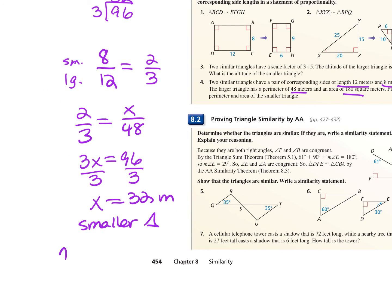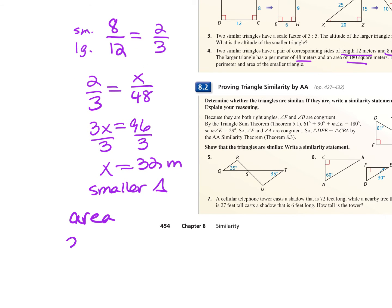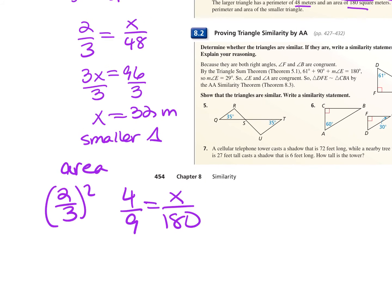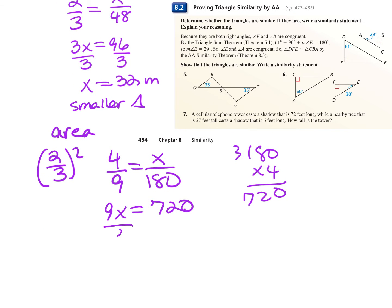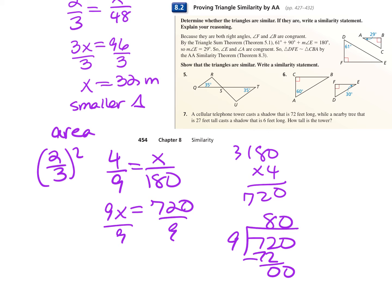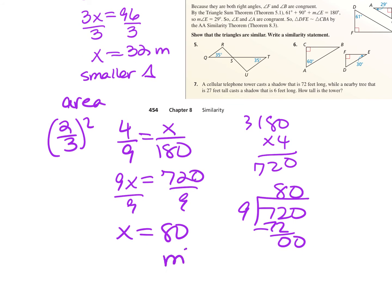For area, take the side length ratio and square it: 2/3 squared becomes 4 over 9. The area 180 was from the larger triangle, so put it in the denominator. Cross multiply: 9x = 180 times 4, which is 720. Divide 720 by 9: it goes 8 times, then 0. The area is 80 meters squared. Remember: square the corresponding side length ratio for area; perimeter uses it as is.